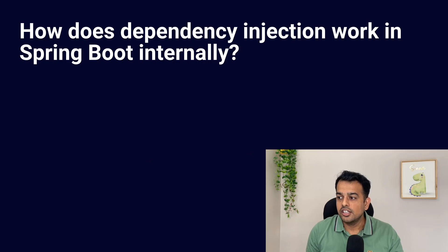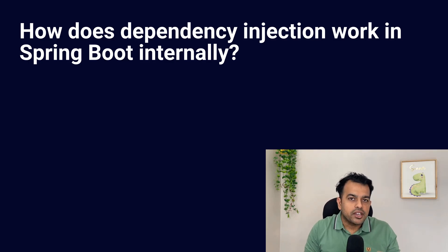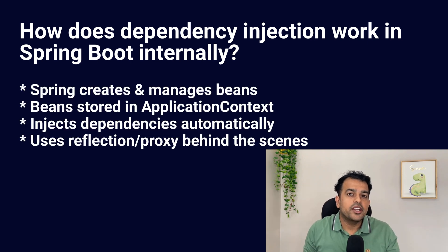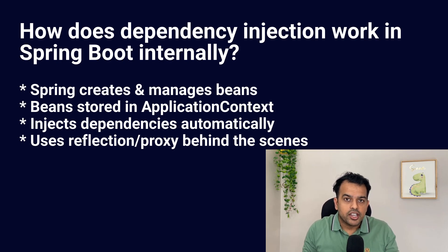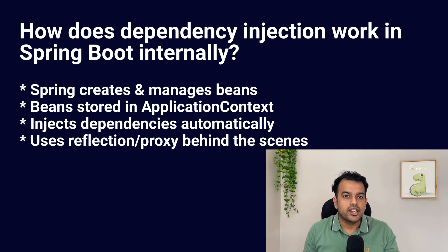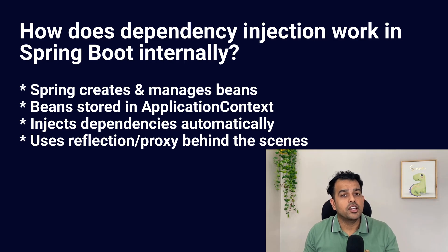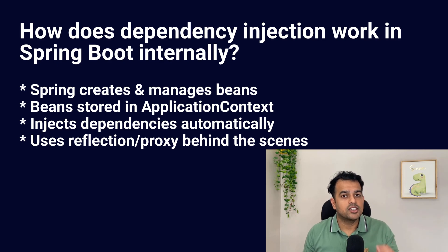How does dependency injection work in Spring Boot internally? Dependency injection simply means Spring creates objects for you. It scans all the classes, finds components, and creates beans. These beans are stored in an application context. Whenever your class needs something, Spring injects it automatically. Internally, Spring uses reflection and proxies to manage this. This is one of the favorite questions of interviewers — 99% of the time they ask this question, so prepare it very well.